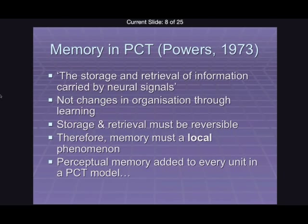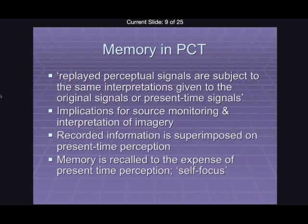What Powers does is add a little memory of perception to each of those units. Powers says that replayed perceptual signals are subject to the same interpretations given to the original signals or present-time signals. Because all memory is just a little store locally of the same perceptions that that unit works on in a real-time sense, that immediately tells us that memory and perception are interwoven and interlinked with one another, and that it's actually relatively subjective and takes quite a lot of processing to distinguish between the two.